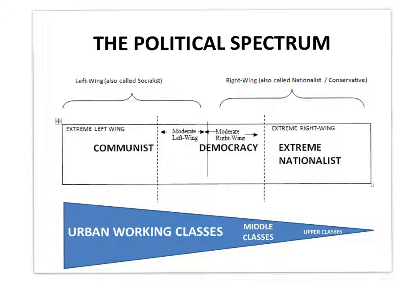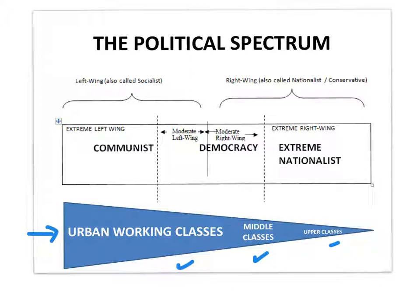Now if you imagine the social pyramid I've just described, I've turned it on its side. So effectively you've still got this pyramid — the large group on the left, the urban working classes, then the middle classes, and the upper classes as the smaller group on the right. What this diagram shows is what we call the political spectrum: the range of political views, which still very much applies to the world today as it does to the world of the 1870s and 1880s when we began this course.